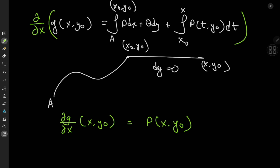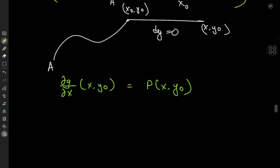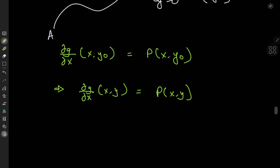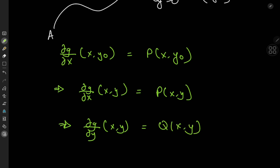Because this is true for an arbitrary point (x₀, y₀), it implies that ∂g/∂x as a function of x and y equals p(x, y). Similarly, we can prove that ∂g/∂y as a function of x and y equals q(x, y).